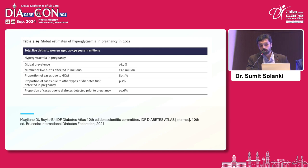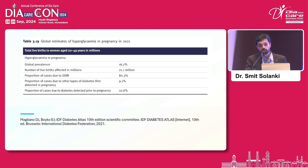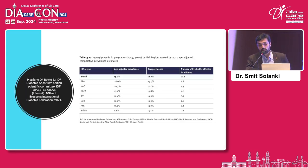This is the data from the Diabetes Atlas, 10th edition. Overall, the global prevalence of hyperglycemia in pregnancy is 16.7%, which is a very high percentage. And 80% of those cases are due to GDM, gestational diabetes mellitus. Another data point from the Atlas shows that the prevalence rate for Southeast Asia is 28%, the highest among all other regions.